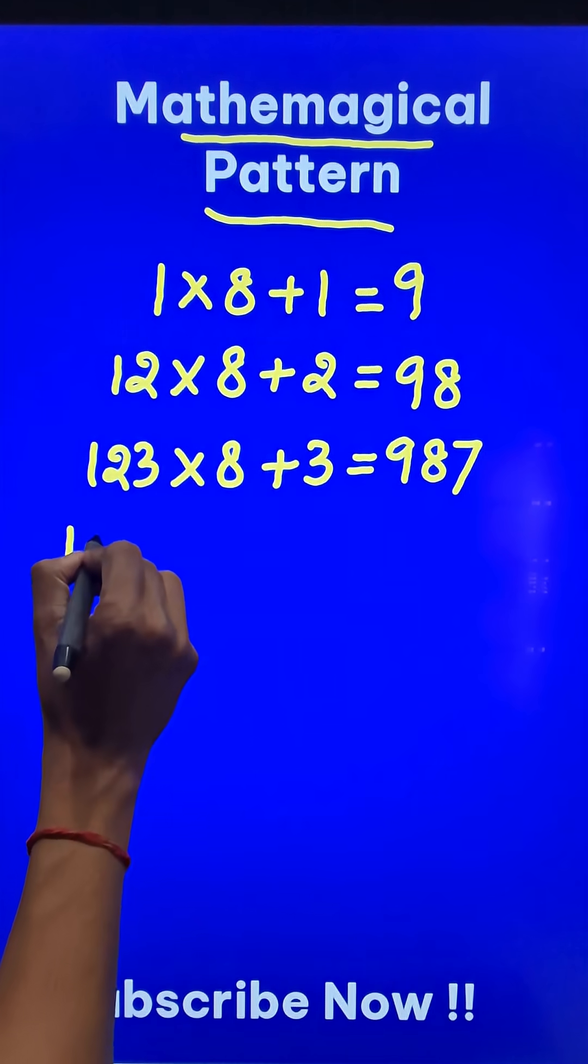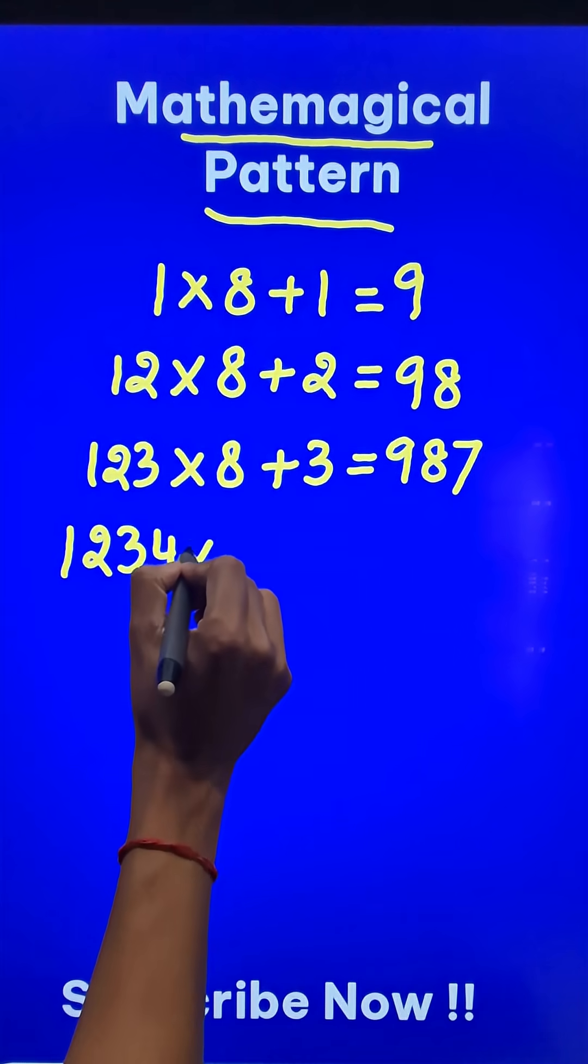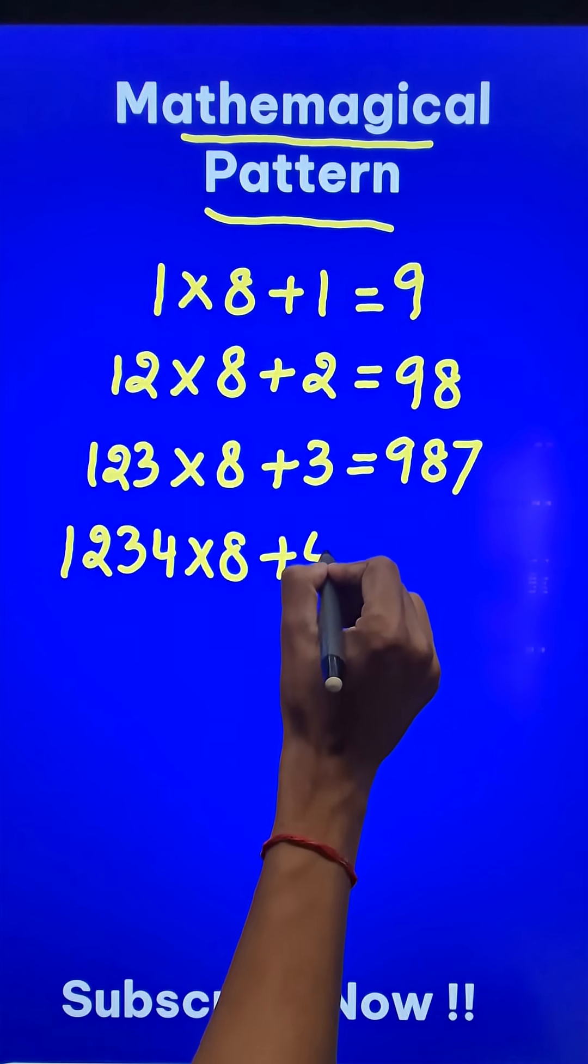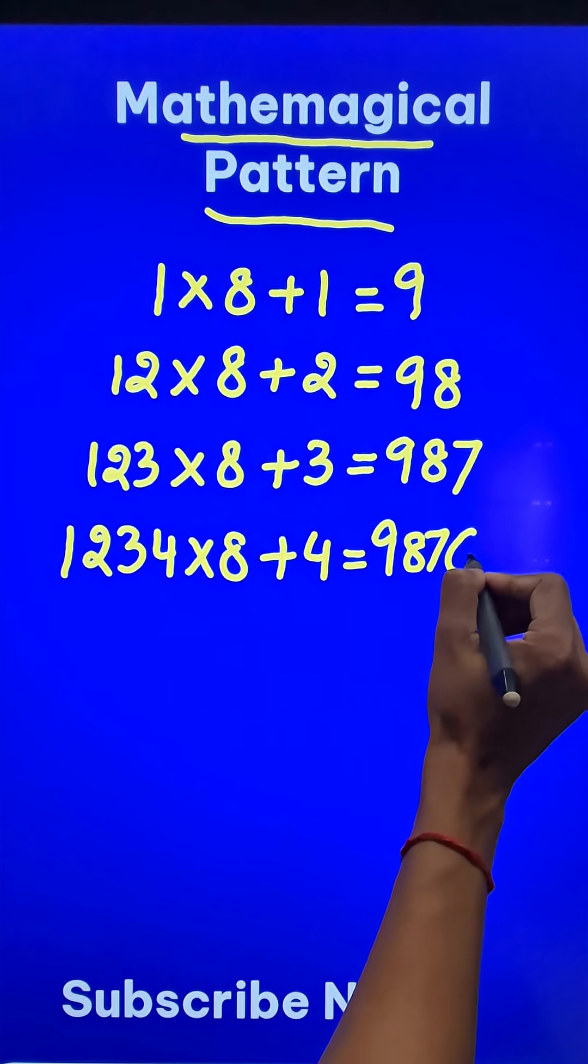And likewise, if you do 1, 2, 3, 4 times 8 and add 4 to the result, you get 9, 8, 7, 6.